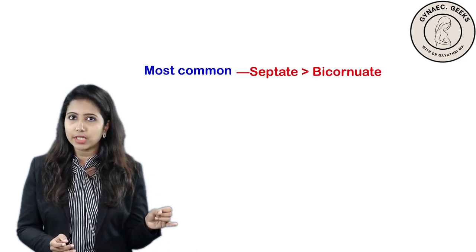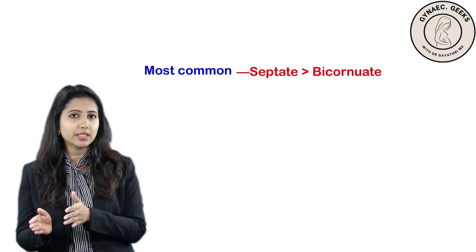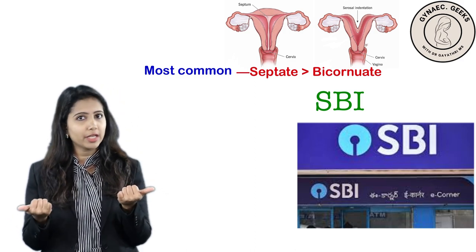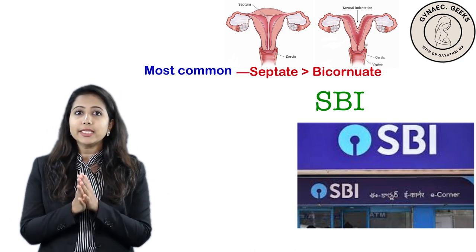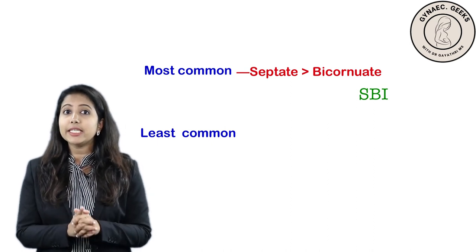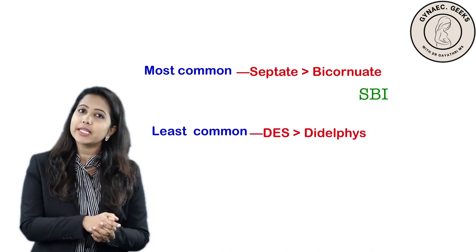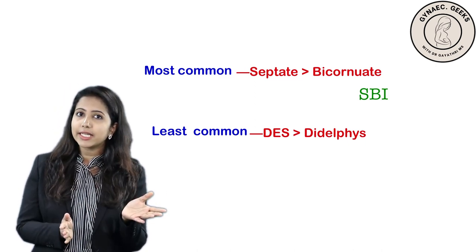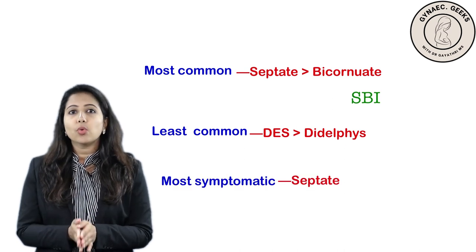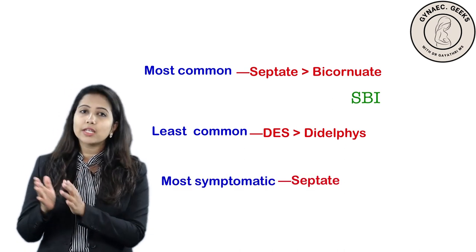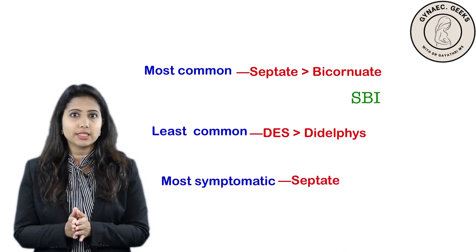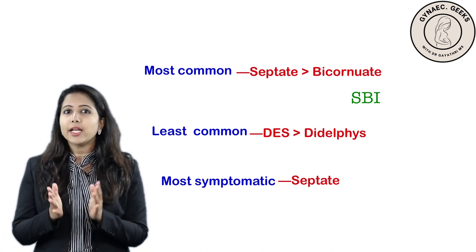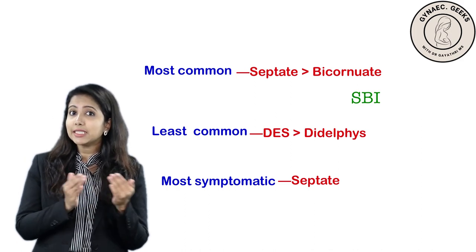The most common anomaly is septate uterus, followed by bicornuate. You can remember this using SBI — septate followed by bicornuate. The least common anomaly is DES-related, followed by didelphys uterus. The most symptomatic or most problematic anomaly is also the septate uterus.